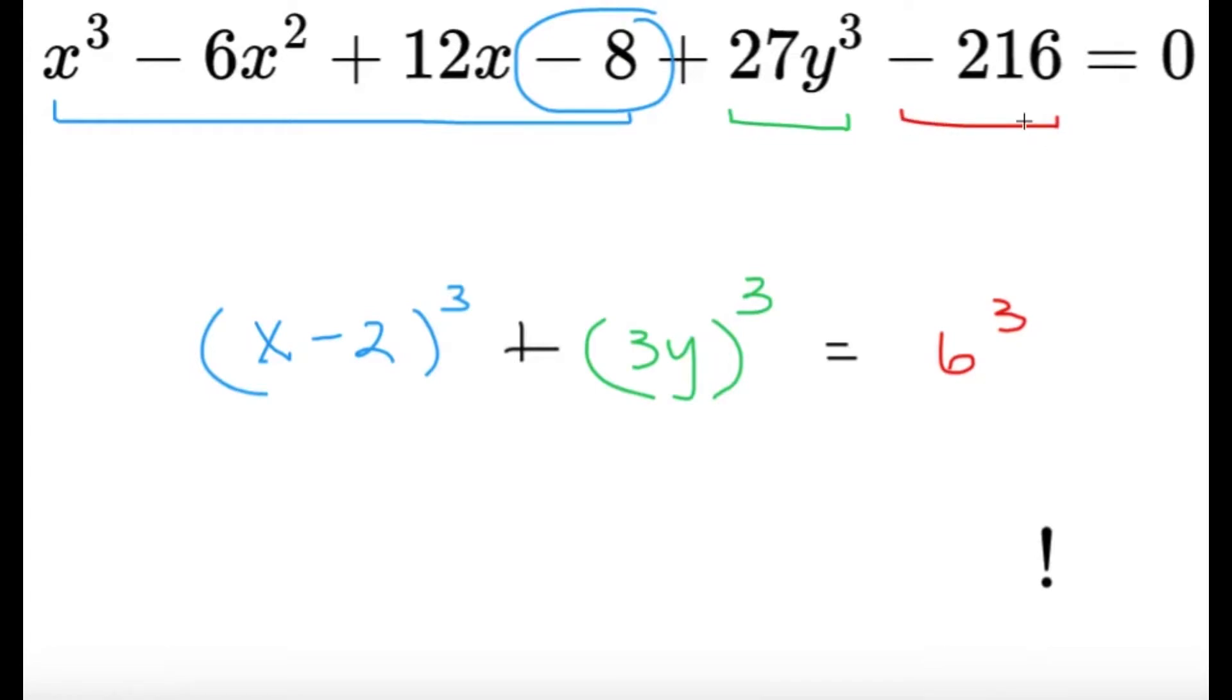216, that's an oddly familiar number—it's actually 6³. So what I did here is I'm going to make this (x - 2)³. Completing the cube, we have another cube here from the 27y³, and then we're going to put this -216 on the other side, and that's going to be equal to 6³. So as intended from the question, we have a sum of cubes equal to another cube scenario.